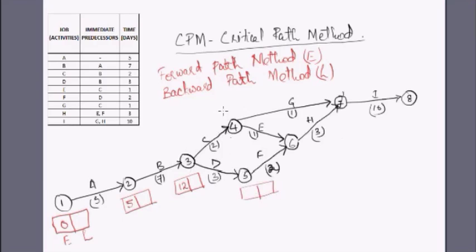For activity C there is just one activity coming into node 4, so we add up: 12 plus 2 equals 14 — on the fourteenth day we arrive at node 4. For activity D: 12 plus 3 equals 15, so on the fifteenth day we arrive at node 5.